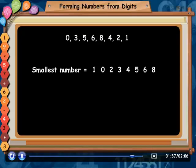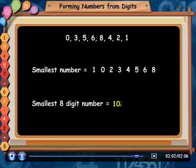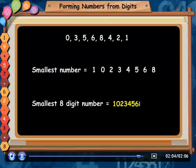So, now, we have the smallest 8-digit number, that is, 10234568. So, let us see.